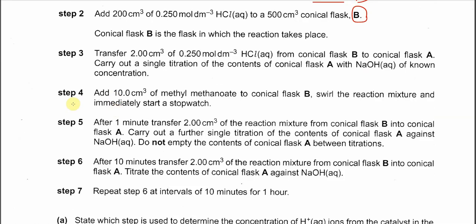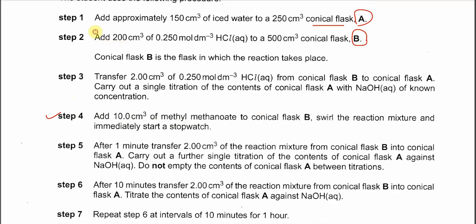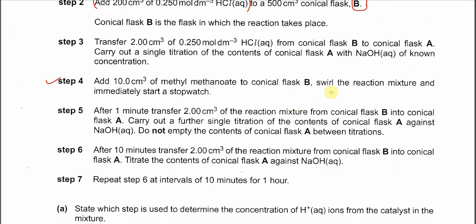After that, the hydrolysis starts to happen. Step 4: add 10 cm³ of methyl methanoate — the ester — to conical flask B, which contains the acid (HCl). Mix the reaction mixture and start the stopwatch. Once it is added, hydrolysis begins.